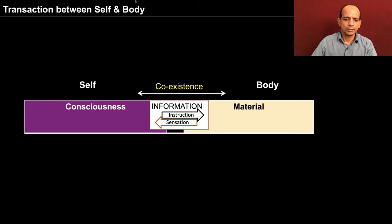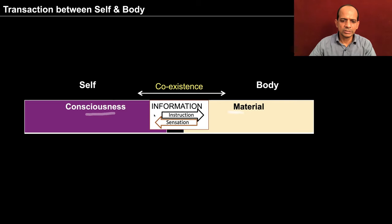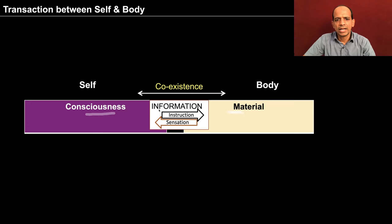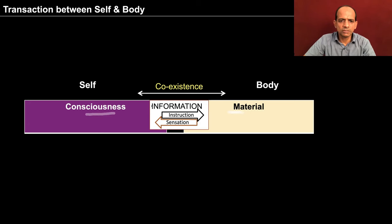The only transaction taking place between the self and the body is of information — there is no material transaction taking place. Instruction means that when I am talking to you, I am instructing my body. I have some feeling, some thought in me; I am selecting what to say and what not to say, and then I am transacting this information to the body and the expression is taking place. Similarly, when I am looking at the screen, some sensation is reaching me based on which I decide what to say. This kind of transaction is taking place regularly between me and the body, and now we are going to observe this more closely.